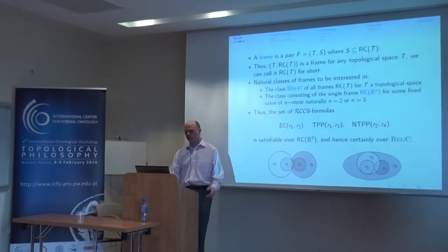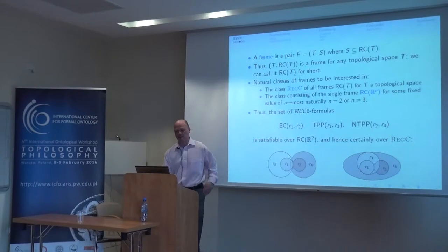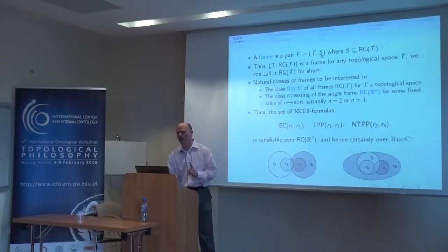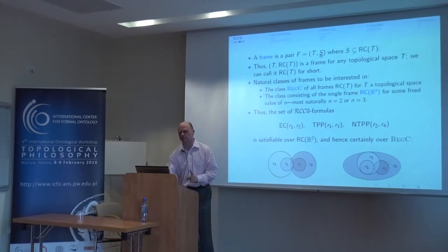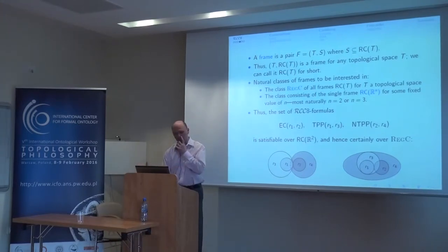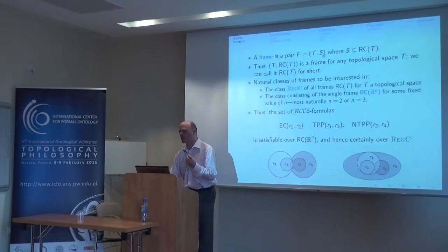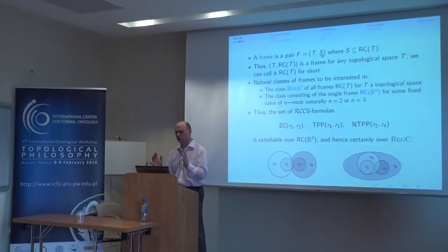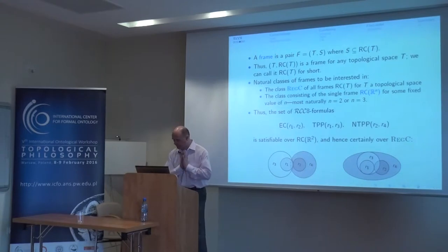That's what a region is. Now I can pretty well state my problem. By a frame — I'll keep using this word — a frame will be a topological space plus a subset of its regular closed algebra. You are to think of the subset of its regular closed algebra as the things we allow to be regions within that space. Maybe not all regular closed sets will count as regions — all regions will be regular closed, but we may want a smaller collection. When I talk about a frame, I mean a topological space plus a choice of which regular closed sets we count as regions.